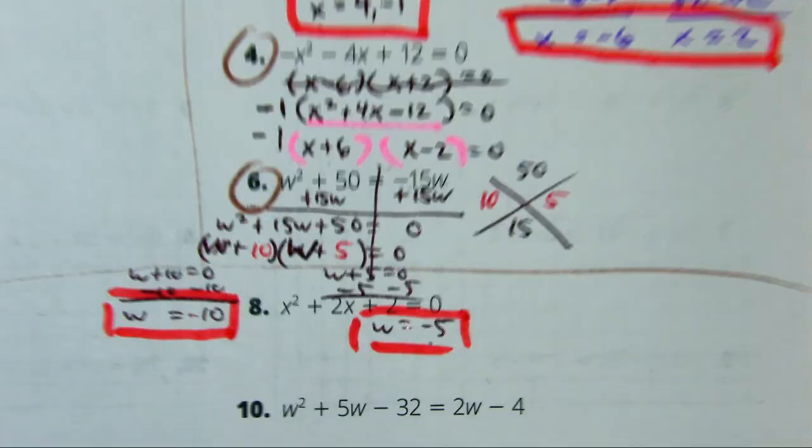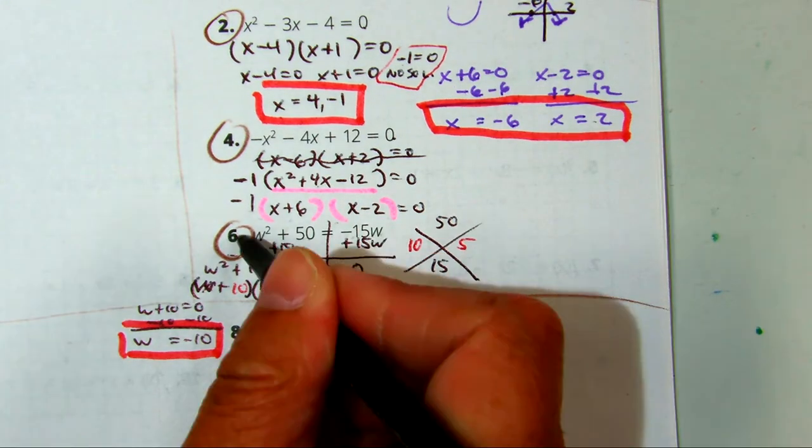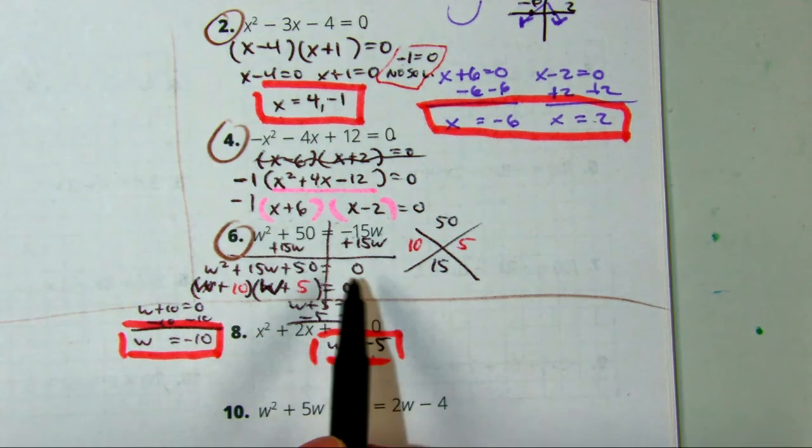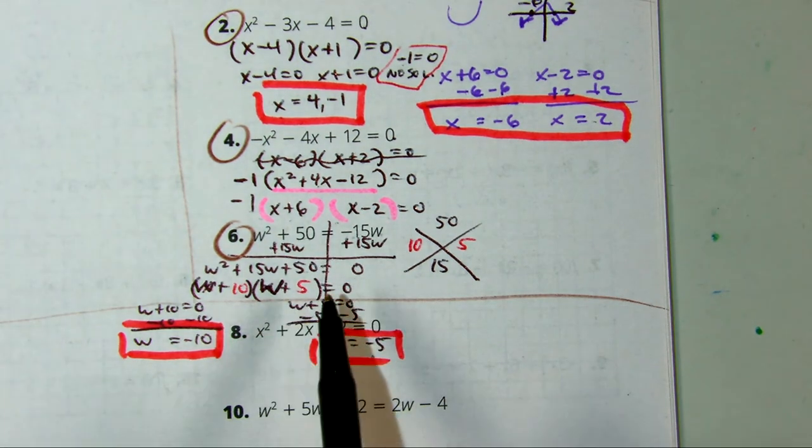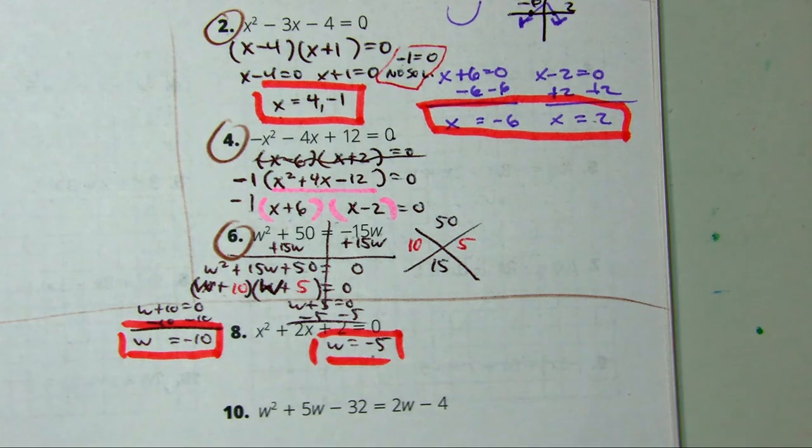So, there we did questions 2, 4, and 6. Make sure they're set equal to 0. In this problem, we had to move it over. Again, pay attention to your factoring. And if you need to change them to different variables, you can go back to X. But in the original answer, it's nice to use the original variable.